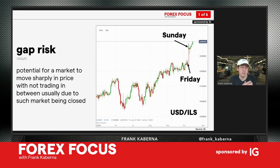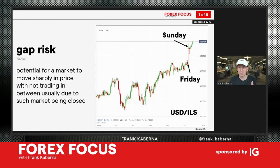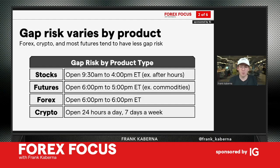We're using the dollar versus the shekel as a recent example. Over the course of a weekend, when stocks, futures, options, and forex are usually closed, you can see gap risk played out. Israel declared war over the course of a weekend, and this market — the dollar — jumped higher while the shekel jumped lower by the time markets came around on Sunday night and Monday morning. That's an example of a gap in the marketplace.